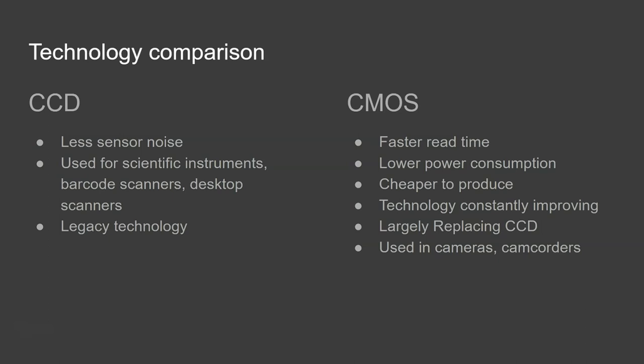They're also cheaper to produce because there are less components, you don't need a separate amplifier or a separate charge to signal converter. And with CMOS there's a lot more research going into it so the technology is constantly improving especially in regards to sensor noise there's big improvements so because of that they're largely replacing CCDs and they are the main technology used in cameras and camcorders.